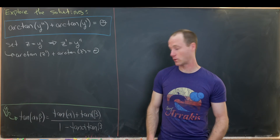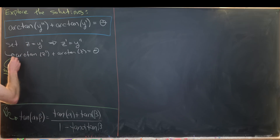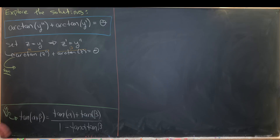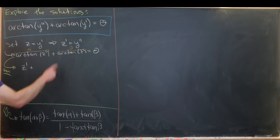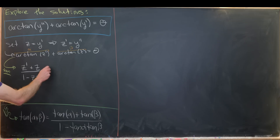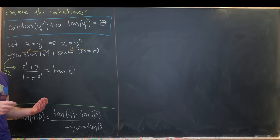Now we'll use the sum angle formula by applying tangent to both sides of this equation. Viewing arctan(z') as our α term and arctan(z) as our β term — and noting that tangent and inverse tangent annihilate each other — taking the tangent of this sum gives us (z' + z) / (1 − z·z') = tan θ.